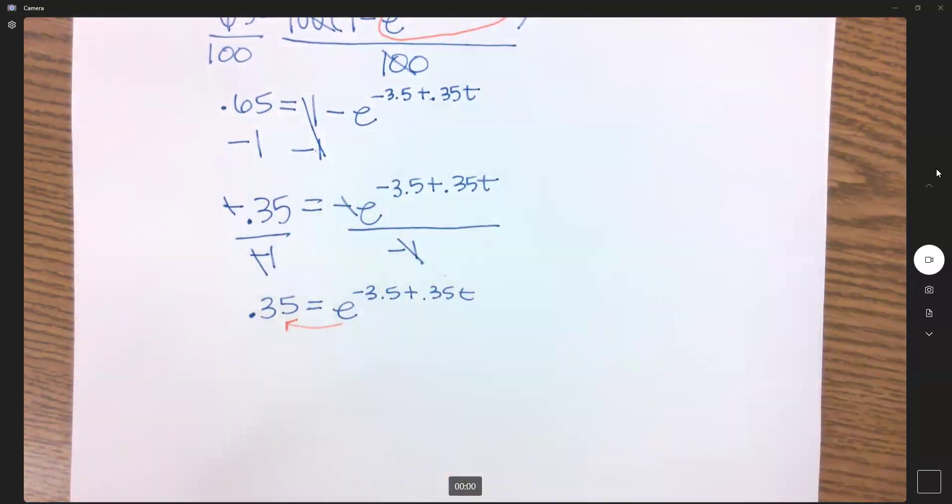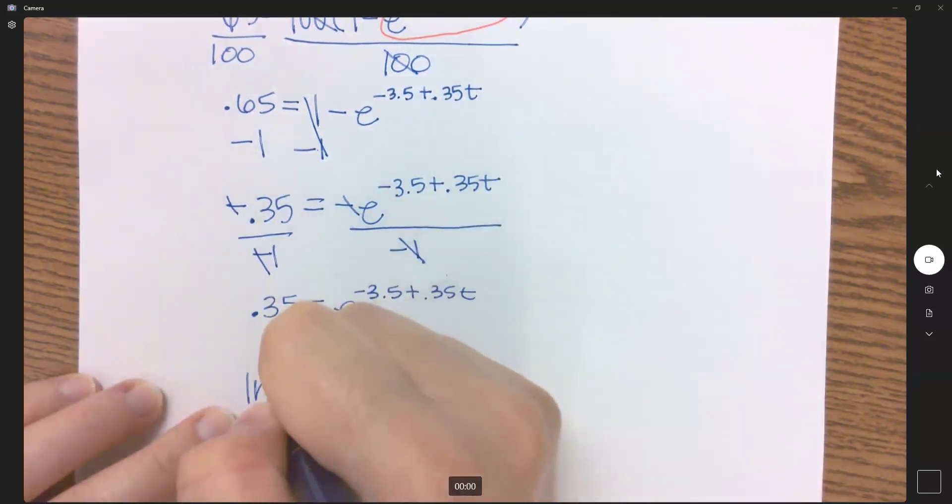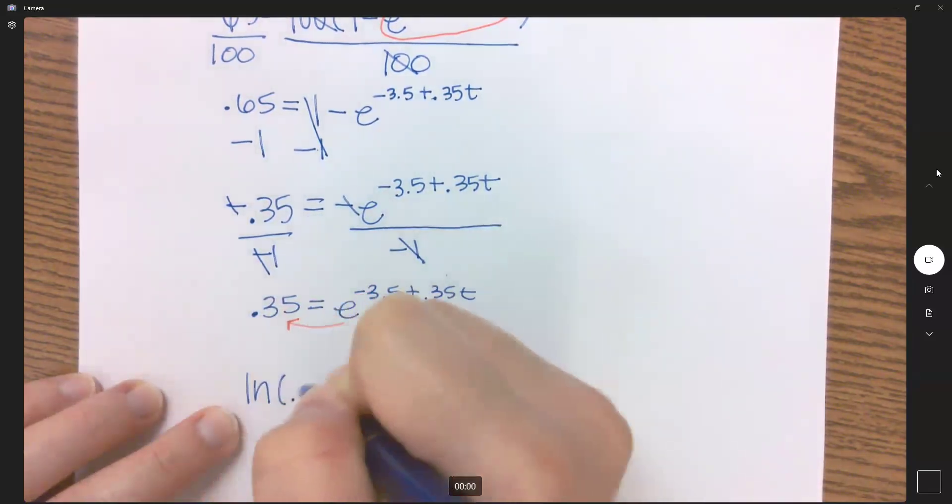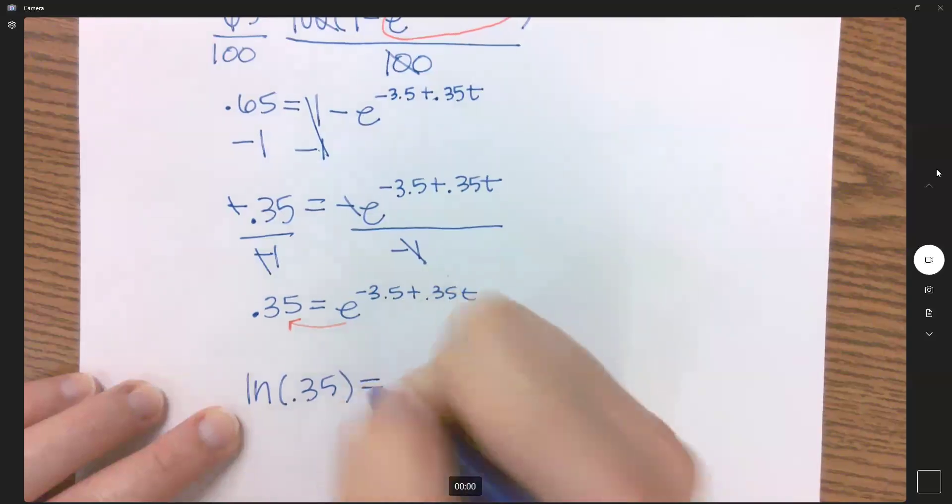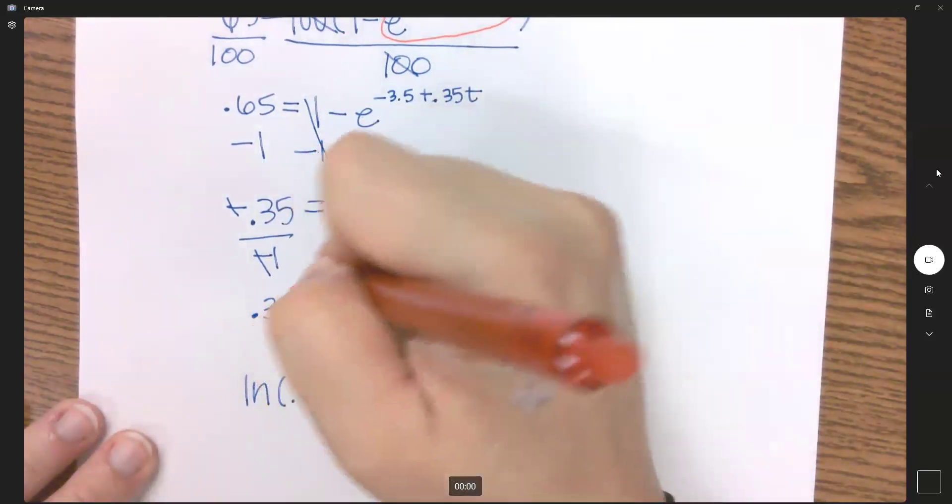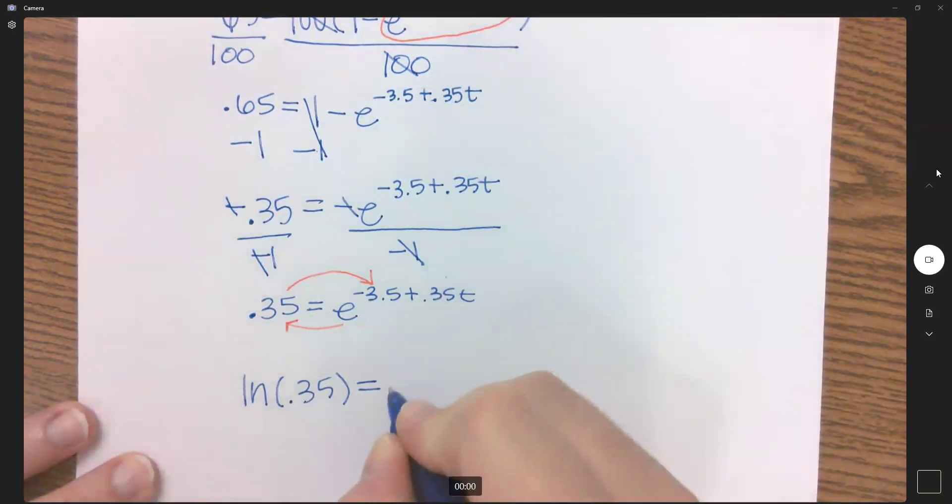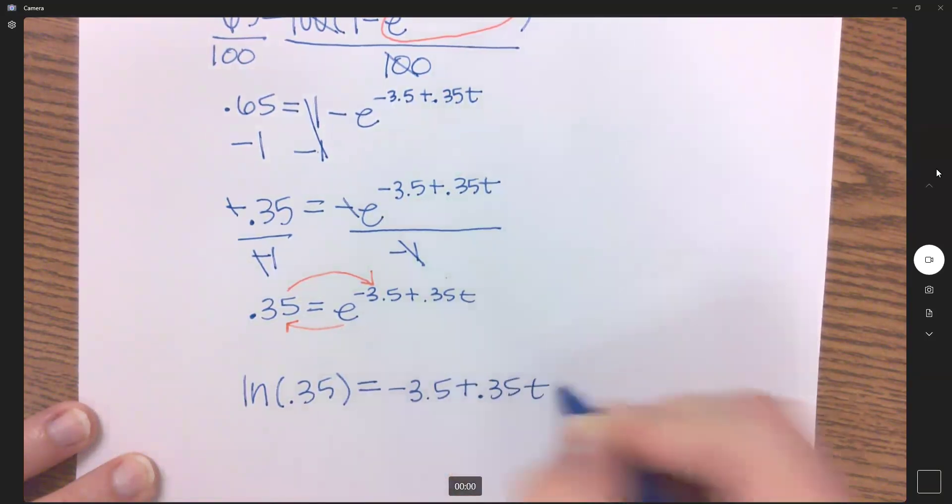When I go from the base to the other side of the equals, we get natural log of 0.35, and that's going to equal what's left over, which equals the exponent: minus 3.5 plus 0.35t.